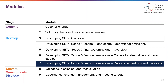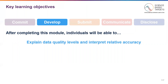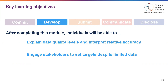For this module, you should have reviewed Modules 1 through 6 and have an understanding of Scope 3 Finance Emissions. We will be talking specifically around data considerations and trade-offs that financial institutions will have to make. After completing this module, you will be able to explain data quality levels and interpret their relative accuracy, engage stakeholders to set targets despite limited data, and create an action plan to improve data quality for your organization and for your clients or portfolio companies.